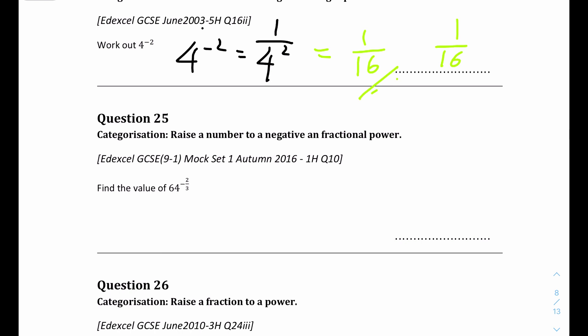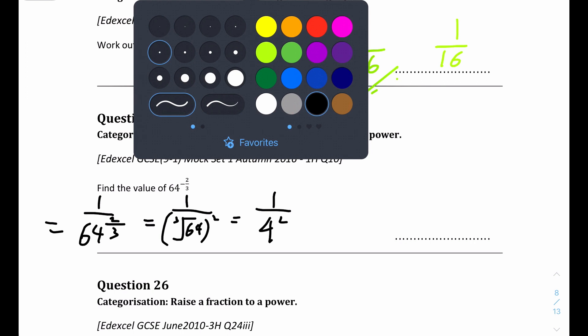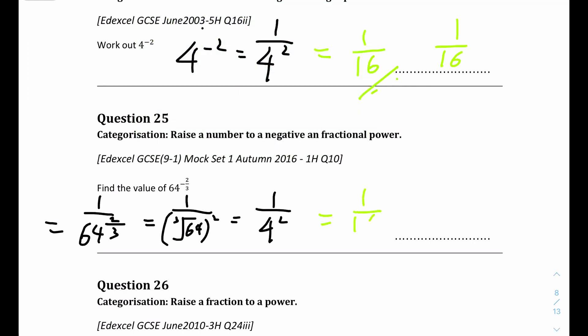Question 25: find the value of 64 to the power of negative 2 over 3. First take the reciprocal to get rid of the negative: 1 over 64 to the power of 2 over 3. Then do the cube root of 64 first, which is 4, and then square it: 4 squared equals 16. The final answer is 1 over 16.